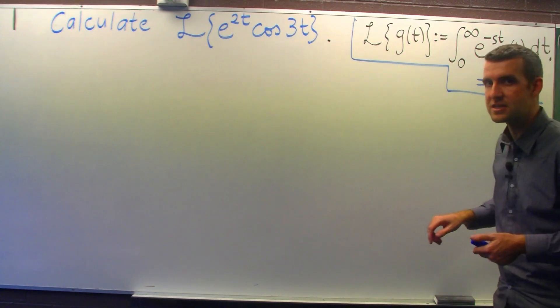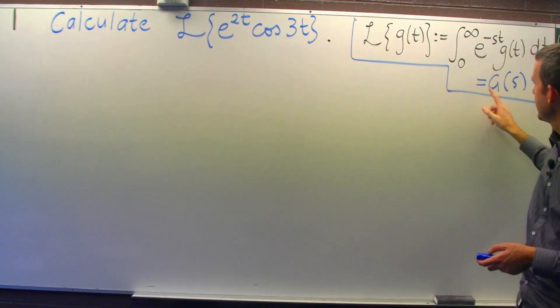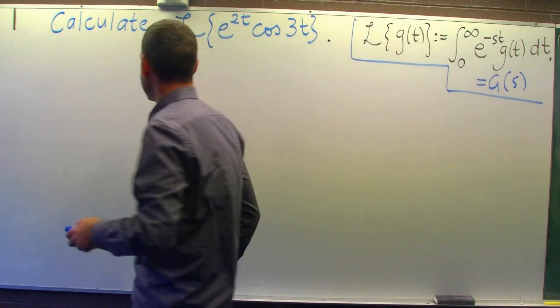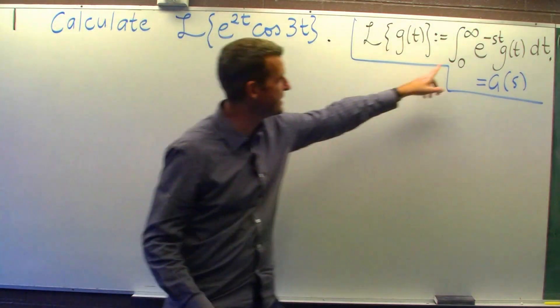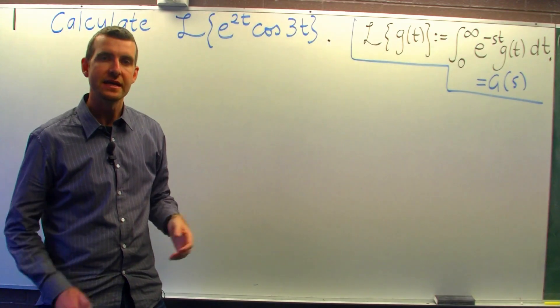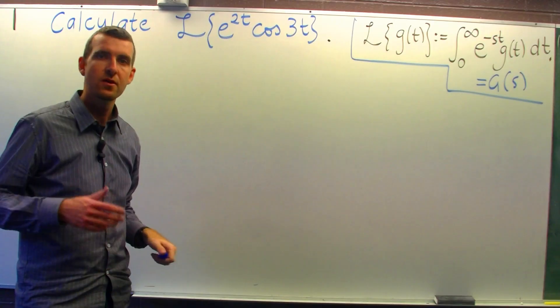So usually the notation is the following: little g of t for the function, the original function, and big G of s for the Laplace transform of little g. Now if you take this and put it in here, it's not so easy to evaluate. So how do we actually work this out? What is the Laplace transform of this?